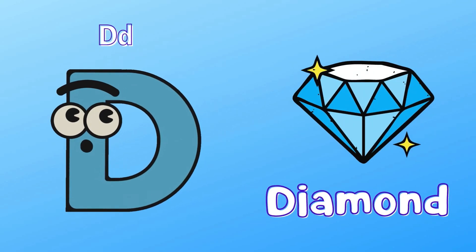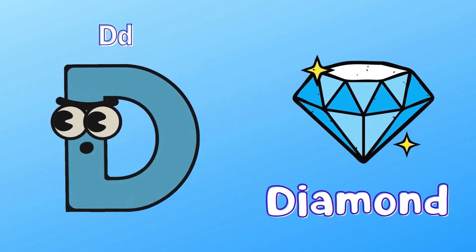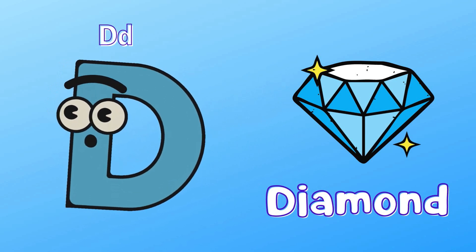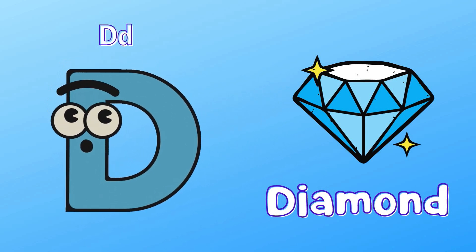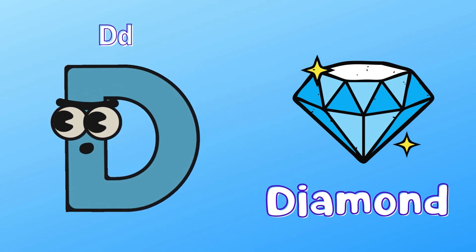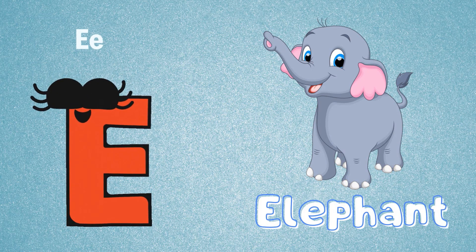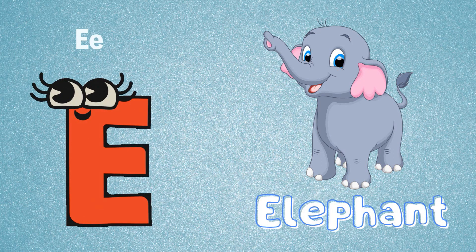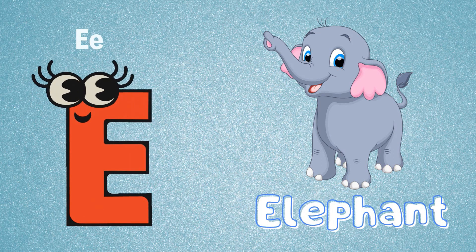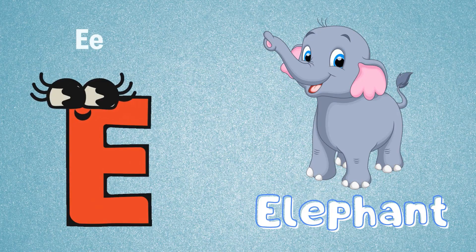D is for Diamond, D. Diamond. E is for Elephant, E. Elephant.